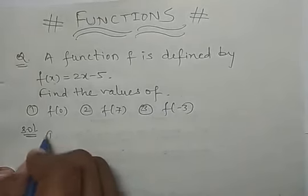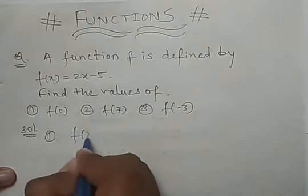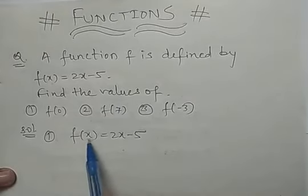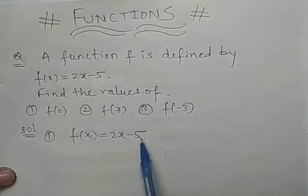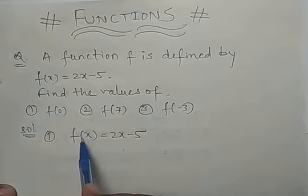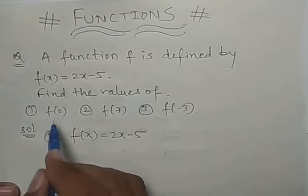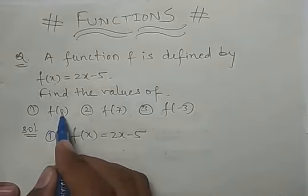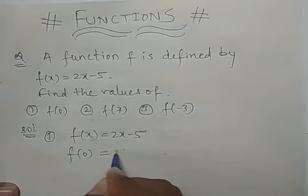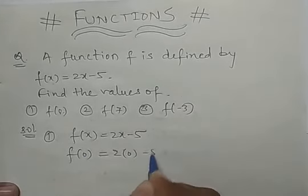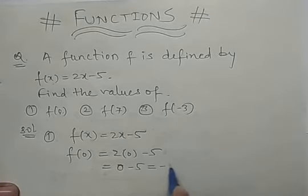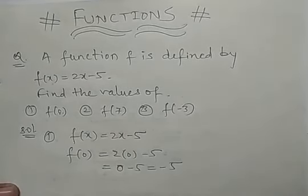دیکھئے ایک function ہے اور یہ f of x کے form میں define ہے کیونکہ یہاں x variable کی value ہے، اس لئے یہ ایک function ہے۔ اس function کی ہمیں value نکالنی ہے x = 0 پر۔ یہاں x کی place پر 0 put کر دیجئے، تو یہ ہو جائے گا 2(0) - 5 = minus 5.